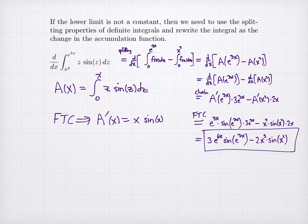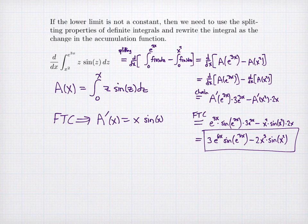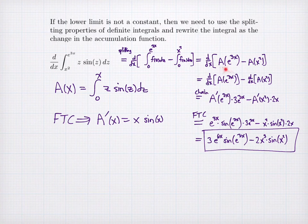To recap: we're recognizing functions where I have a constant as the lower limit and my input variable as the upper limit — those are accumulation functions. The fundamental theorem of calculus says the derivative of an accumulation function is the integrand evaluated at the input. When I have more complicated integrals, I think of them using the splitting property as a difference of accumulation functions, so that I can use the chain rule and the fundamental theorem of calculus to find my derivatives.